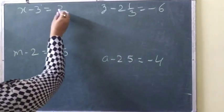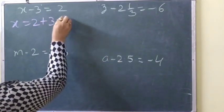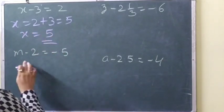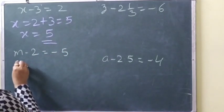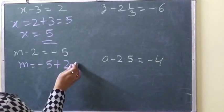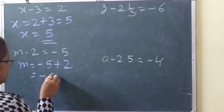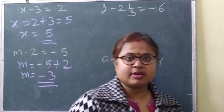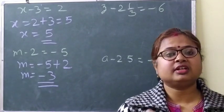For x minus 3 equals 2: x equals 2 plus 3, which is 5. For m minus 2 equals minus 5: m equals minus 5 plus 2, which is minus 3. Because when plus and minus signs are both present we do subtraction, and we put the sign of the greater number in the answer.